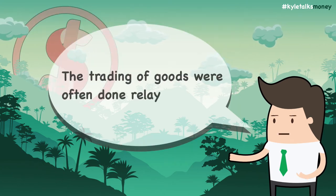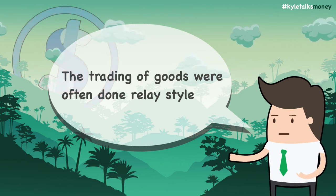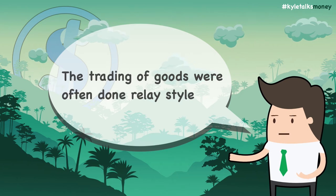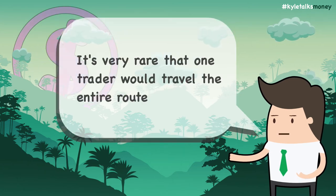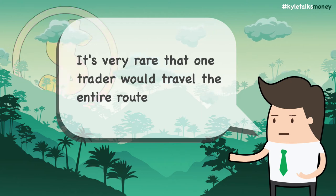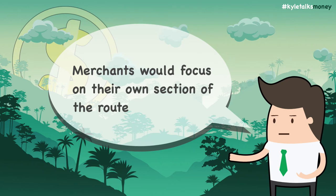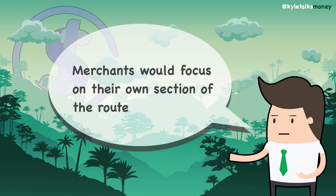Many merchants along the Silk Road were involved in relay trade, where an item would change owners many times and travel a little bit with each one of them before reaching its final buyer. It seems to have been highly unusual for any individual merchants to travel all the way between China and Europe or Northern Africa. Instead, various merchants specialized in transporting goods through various sections of the Silk Road.